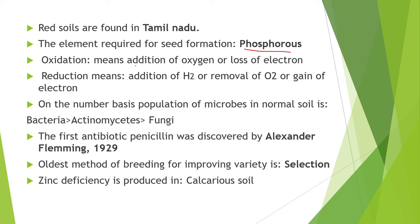Next, the term oxidation and reduction: oxidation means addition of oxygen and removal of hydrogen. Reduction means addition of H₂ gas and removal of O₂. Loss of electrons is called oxidation and gaining of electrons is called reduction. On a number basis, the population of microbes in normal soil is: bacteria > actinomycetes > fungi.